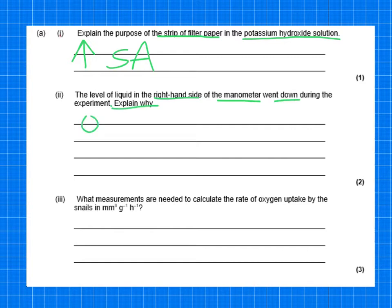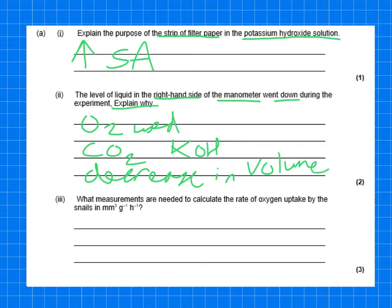Again, the same question as before. The level of liquid in the right-hand side of the manometer in this case went down during the experiment. Explain why. Well, we should know that. Oxygen is used. CO2 is absorbed by the KOH. So decrease in volume or pressure. So three questions. All with the same style of question. Now, question three, again, about calculations.